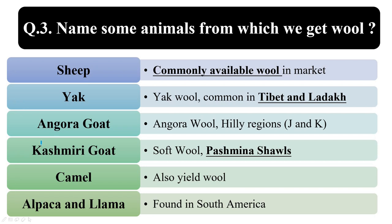Sheep wool is the commonly available wool in the market. Yak wool is common in Tibet and Ladakh. Angora goat gives angora wool and is found in hilly regions of Jammu and Kashmir. The Kashmiri goat gives very soft wool called pashmina wool, from which we make pashmina shawls. Alpaca and llama are types of camels found in South America and they also yield wool.